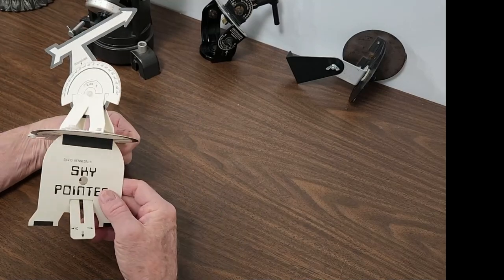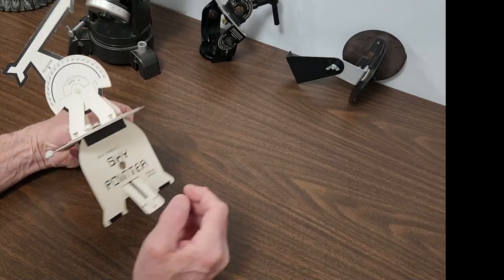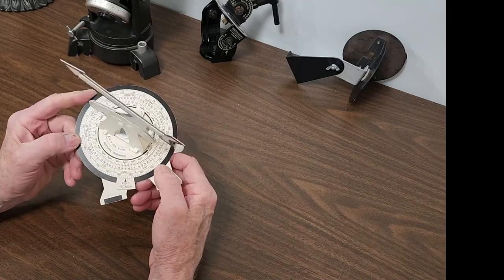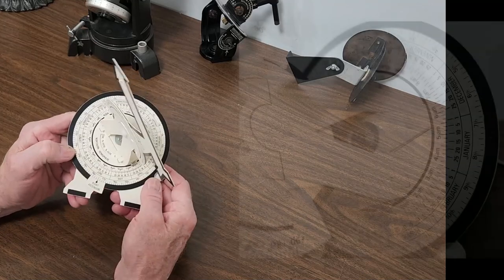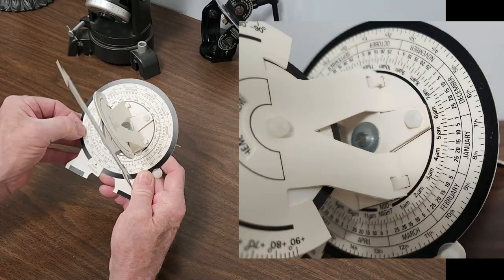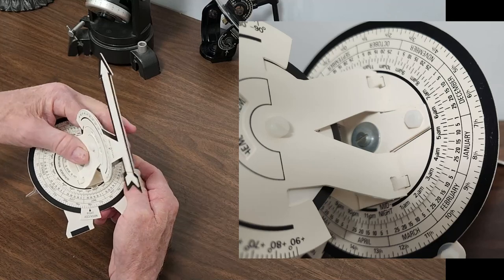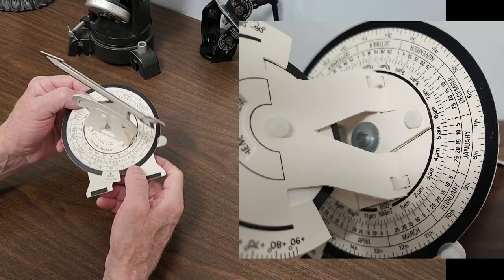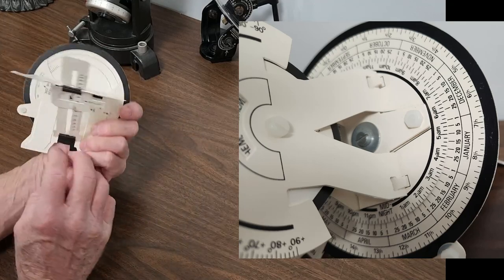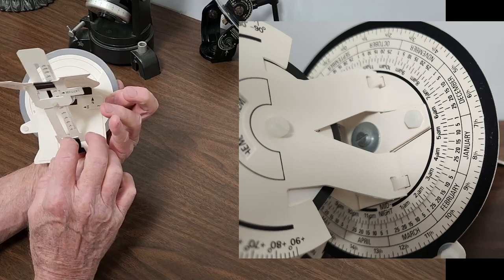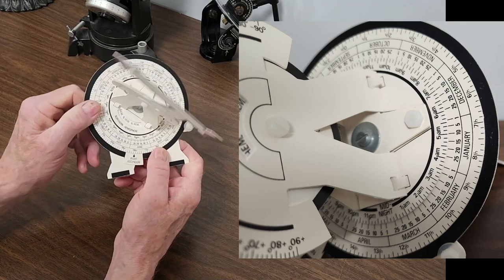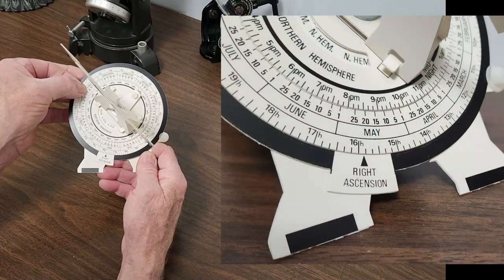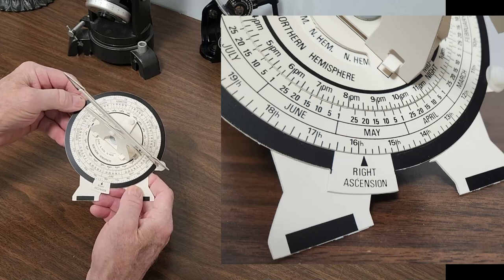This one, on the other hand. This is David Kinedal's sky pointer. This has all the bells and whistles. This has got everything. It's got a full-on time computer with the right ascension, declination, the whole business. Everything is down here. Very much like a planisphere. You set the time versus the date. You can even offset the thing for daylight savings time or time zone or whatever. Your right ascension is readable down here.